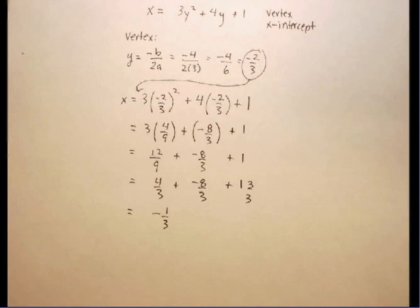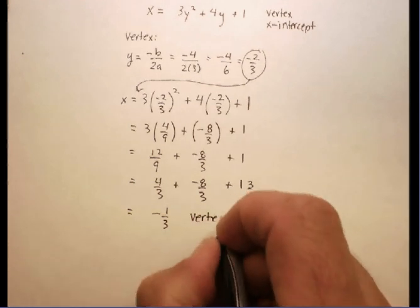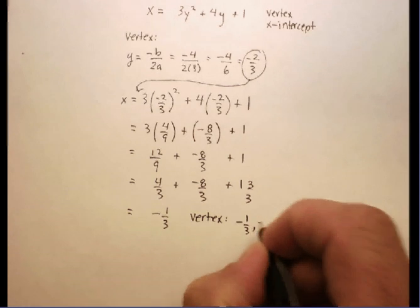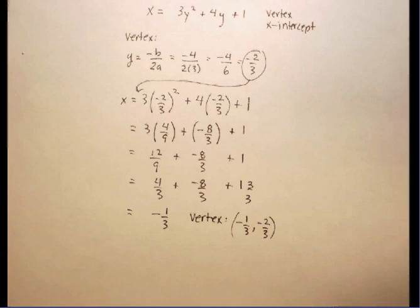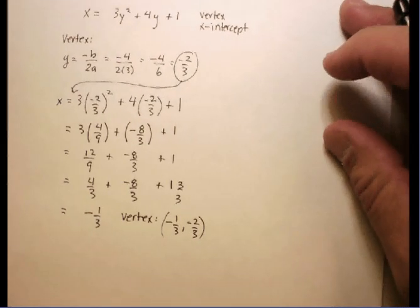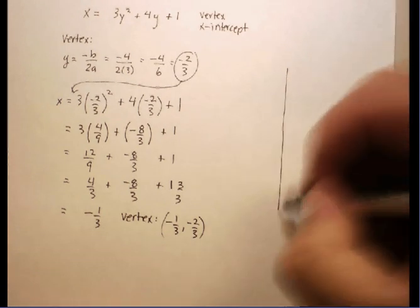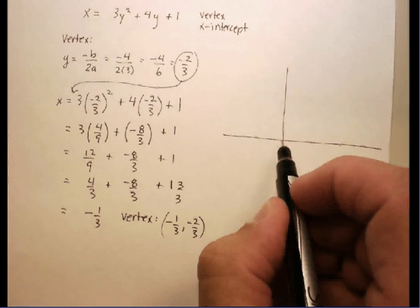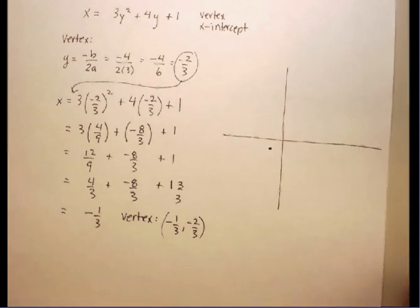My vertex for this particular parabola is going to be a negative 1 third x, negative 2 thirds y. Now I'm going to go ahead and do a quick sketch over to the side here. I'm going to have a negative 1 third along the x, negative 2 thirds along the y. Let's just assume that it's right there.